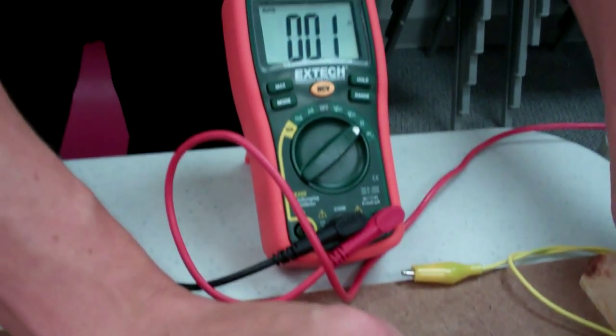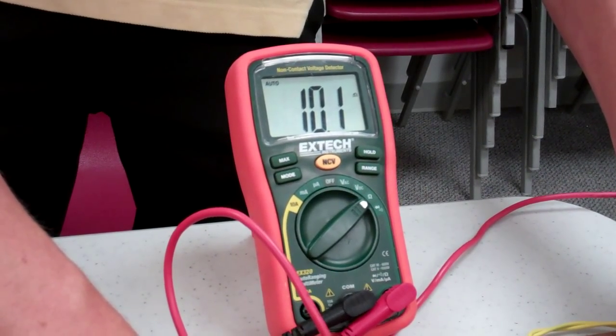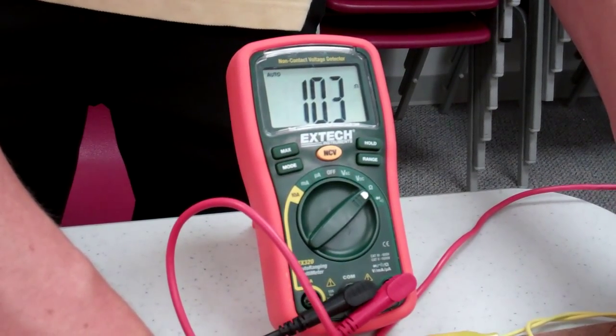Now this will take a second because it has to send a little bit of a charge through it. And it looks like it's settling at around 10 ohms. Exactly, because this is a 10 ohm resistor.